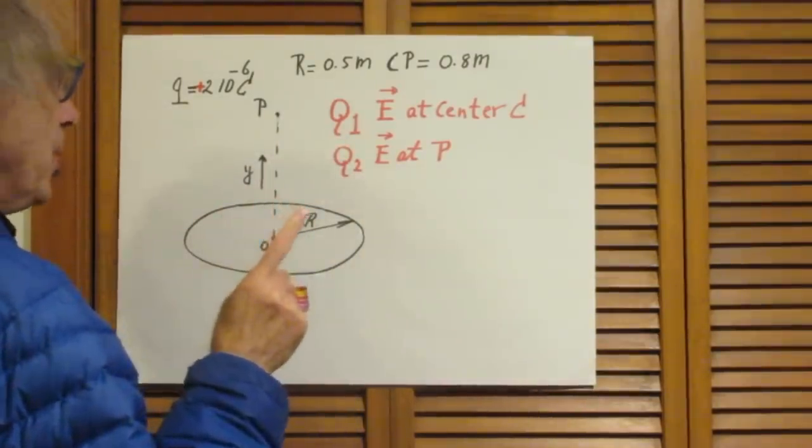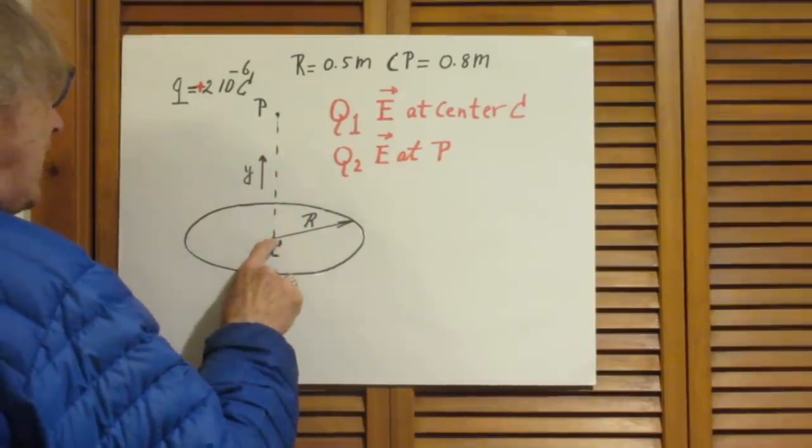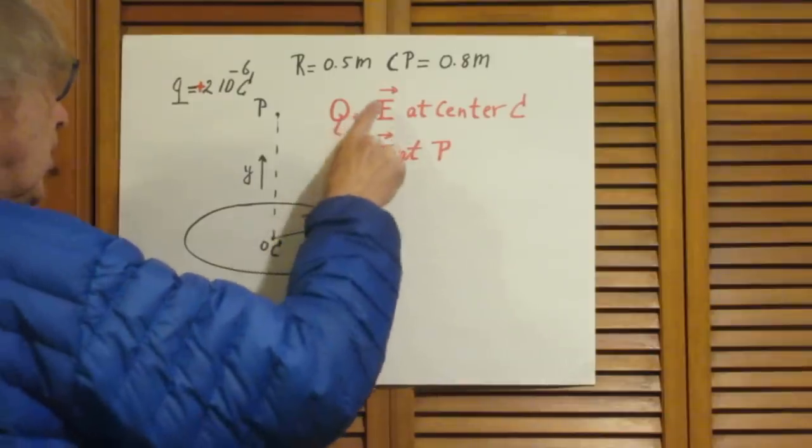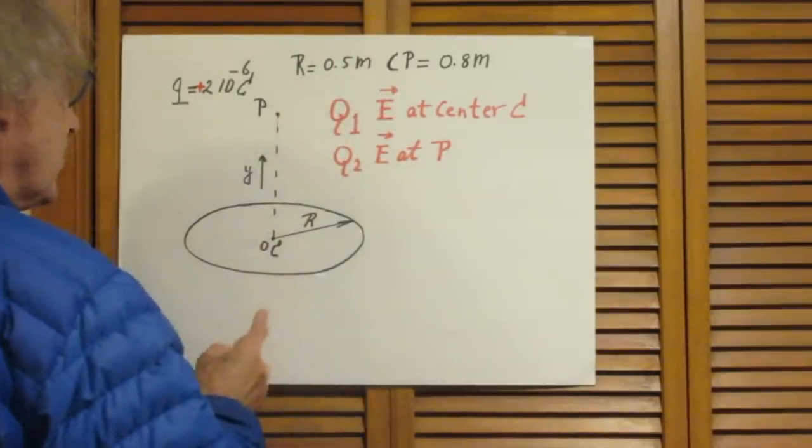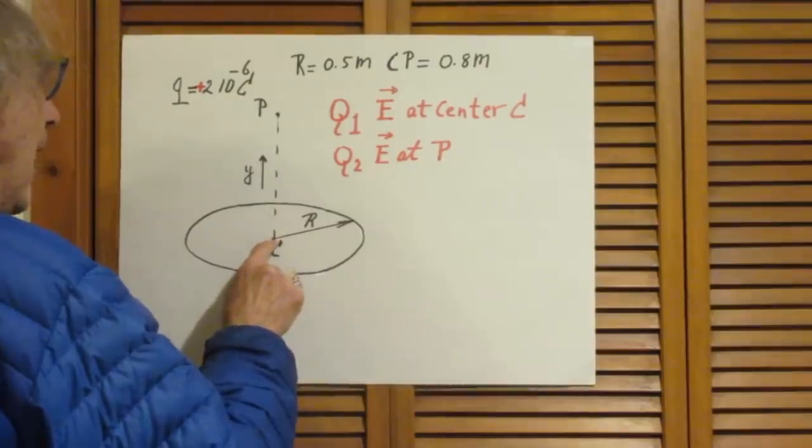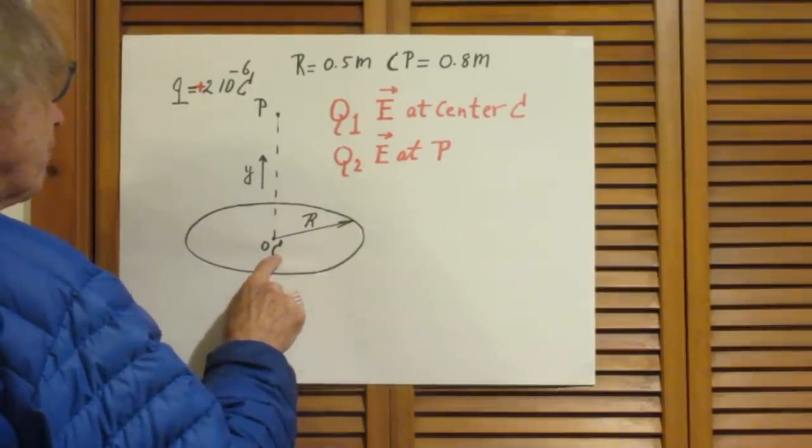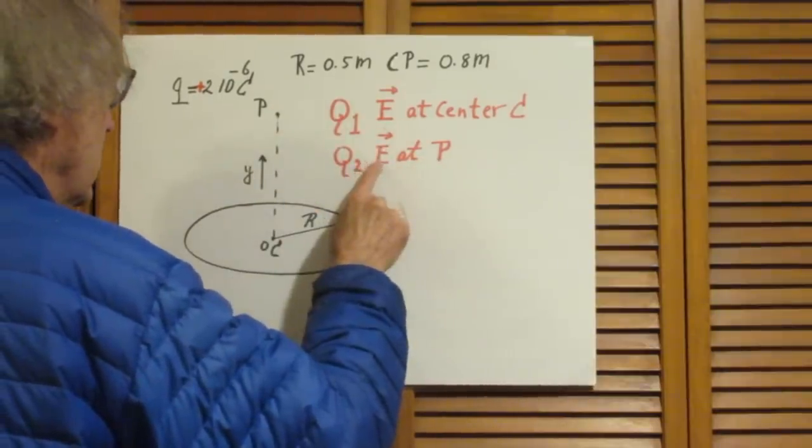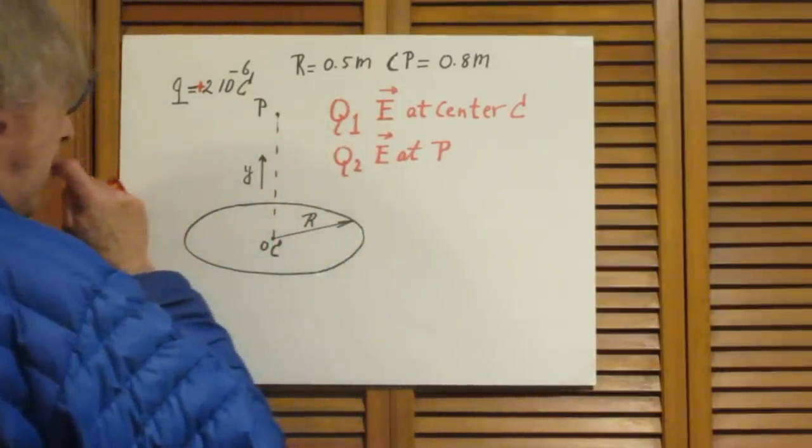The question now is: what is the electric field direction and strength? Because electric field is a vector, I want to know both direction and strength at this point C, and I want it also at this point P—direction and magnitude.